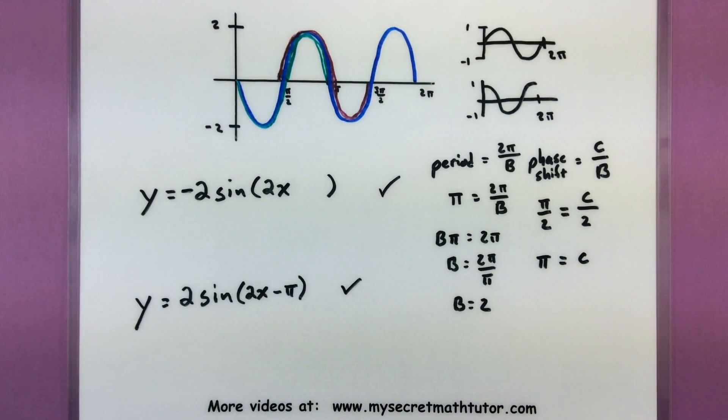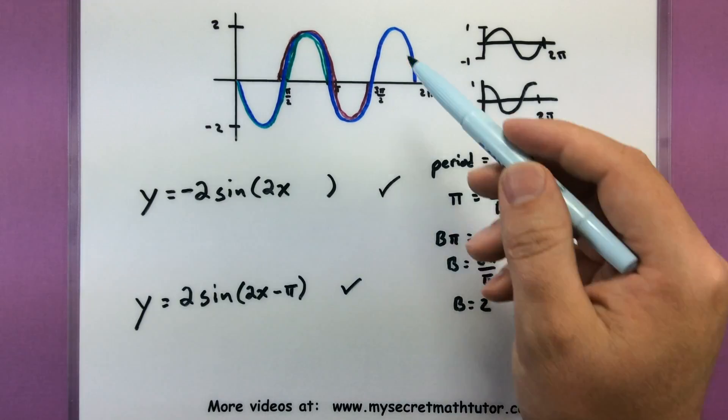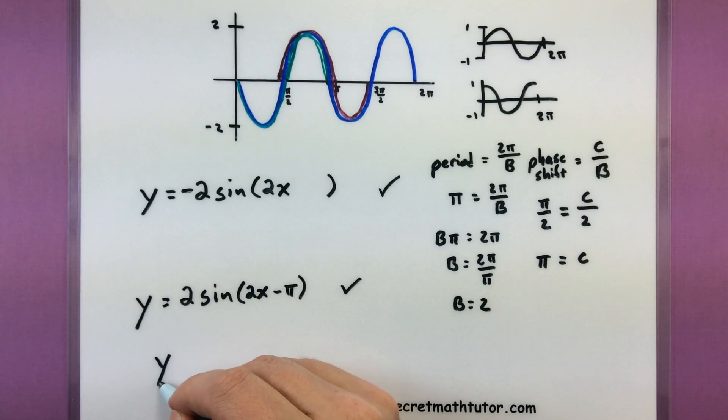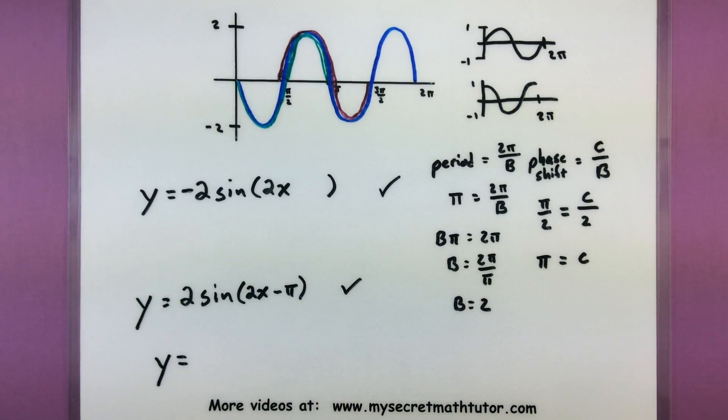So this is another valid, perfectly good equation that I could use to represent this graph. So you might be wondering, wait a minute, now you have two of these. Which one should I put on my homework or on my test? The answer is whichever one your teacher is looking for. Oftentimes if they are part of a test or a homework problem, they'll essentially say find the equation of sine or find the equation of cosine that matches the graph. And they might even give you a little template to work off of.